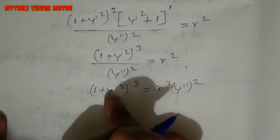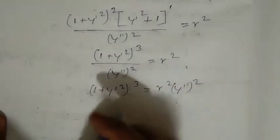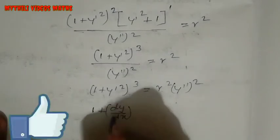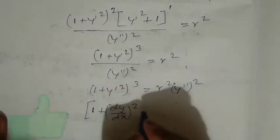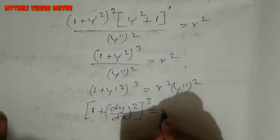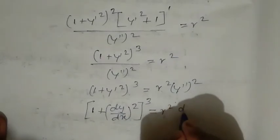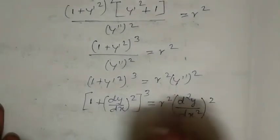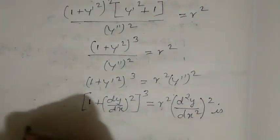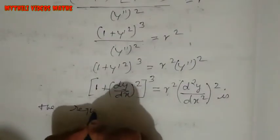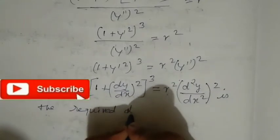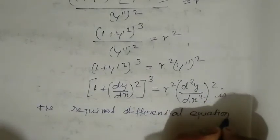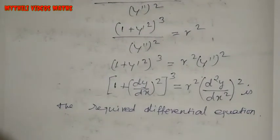Substituting back y dash = dy/dx and y double dash = d²y/dx², the final differential equation is: (1 plus (dy/dx) squared) to the power 3 equals r squared into (d²y/dx²) squared. This is the required differential equation.